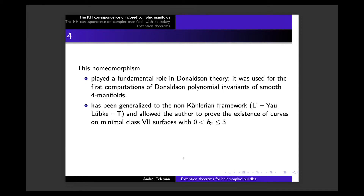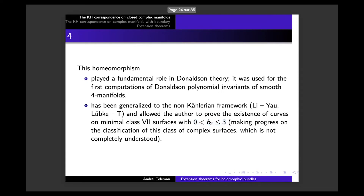Another application: all this — including not only the existence theorem but also the isomorphism of moduli spaces — has been generalized to the non-Kählerian framework, as referenced by Li-Yao and the book I wrote with Martin Lübcke. I used this in the non-Kählerian framework to prove existence of curves on minimal class VII surfaces for b₂ in a certain range, making progress on the classification of this class of complex surfaces, which is not completely understood.